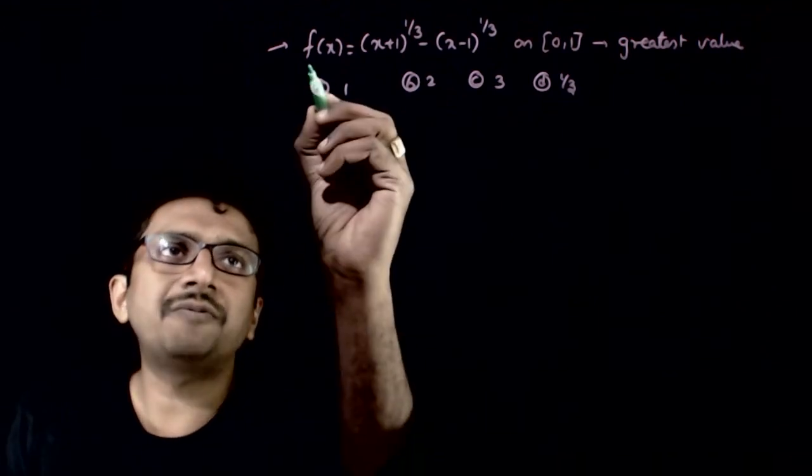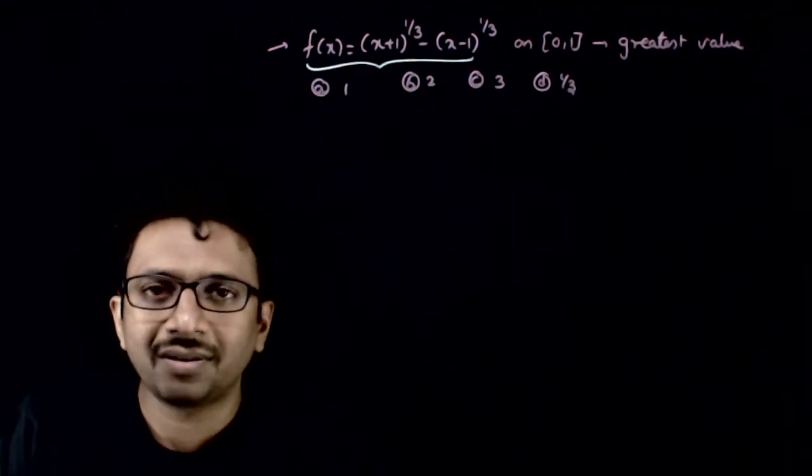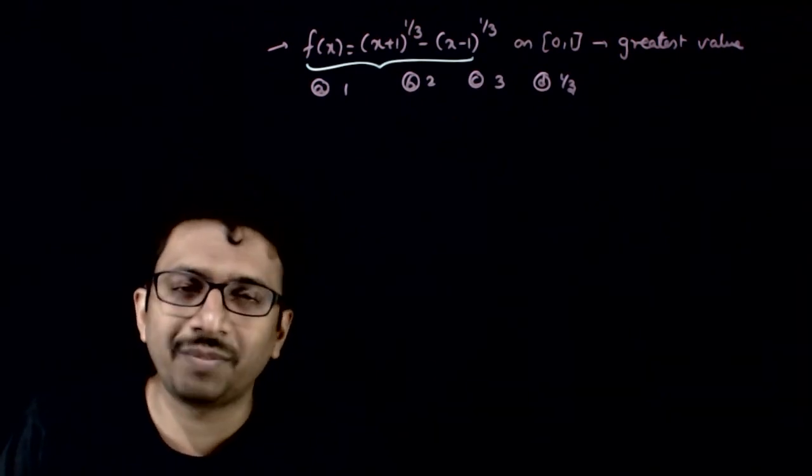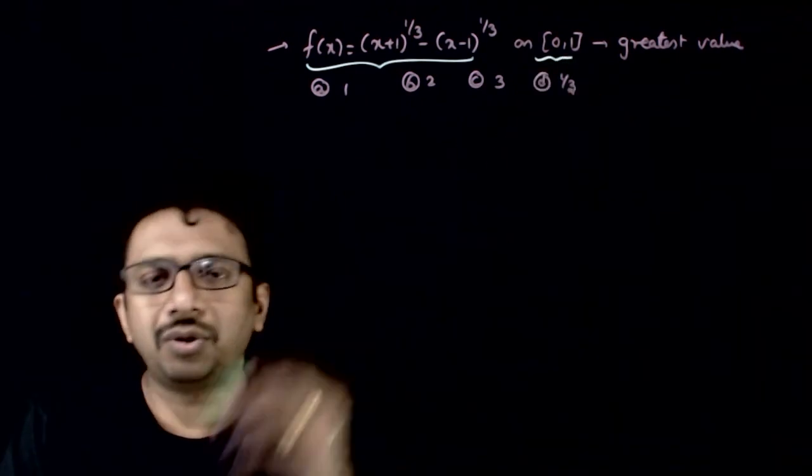Welcome students. In this question you are asked to find the greatest value of this function: x plus 1 whole power 1 by 3 minus x minus 1 whole power 1 by 3 in the interval 0 to 1.